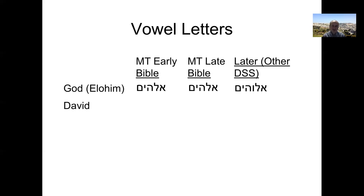Later on, they added these extra letters to help with the pronunciation. But the earlier time period when the Bible was written, they didn't use that letter in the word Elohim. So a lot of the other Dead Sea Scrolls have that extra letter, but the proto-Masoretic texts don't. That's what I mean when I say that they illustrate an older spelling pattern than some of the other scrolls.